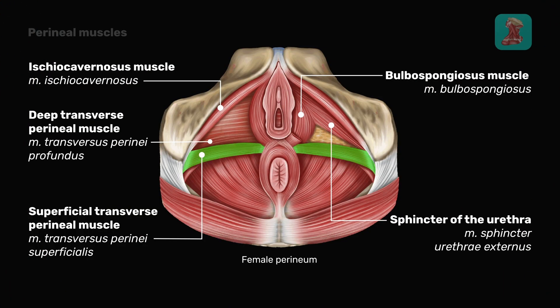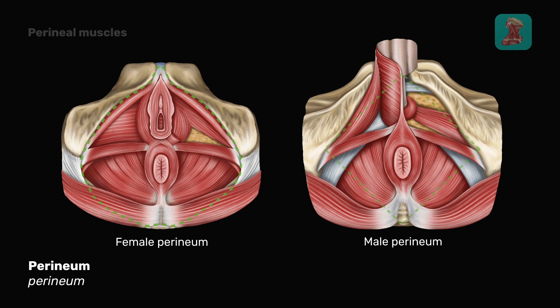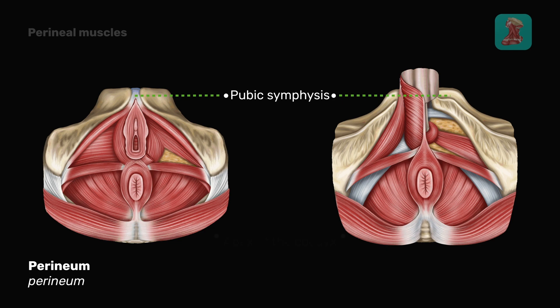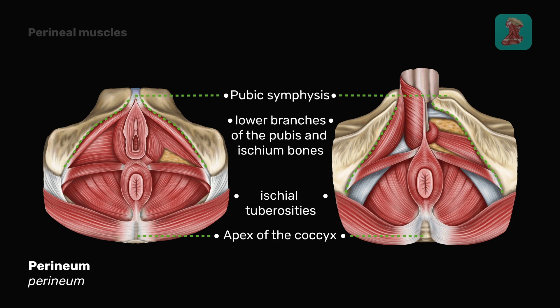The perineum is a structure that covers the exit from the pelvic cavity. It has a rhomboid shape with the following borders: the pubic symphysis anteriorly, the apex of the coccyx inferiorly, the lower branches of the pubis and ischium bones, as well as the ischial tuberosities bilaterally.